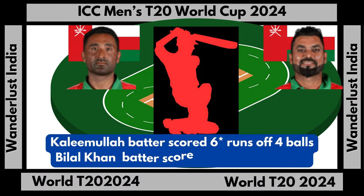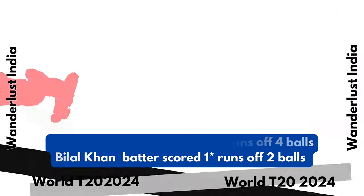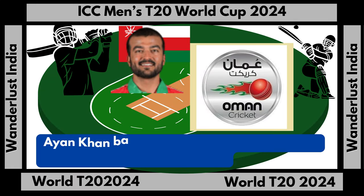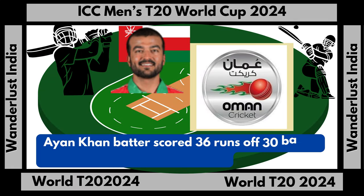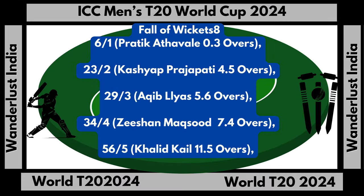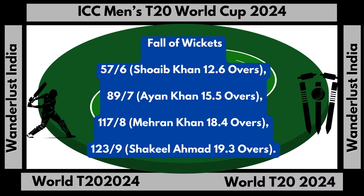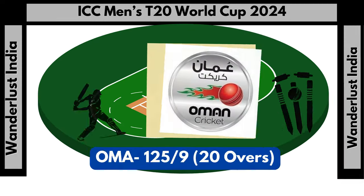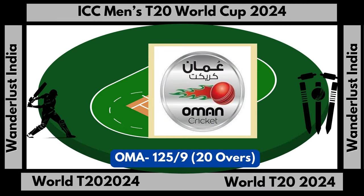Kaley Mulla batter scored 6 not-out runs off 4 balls. Bilal Khan batter scored 1 not-out run off 2 balls. Ayan Khan batter scored 36 runs off 30 balls — 4s: 2, 6s: 2. Oman fall of wickets: 125 runs off 9 wickets. Oman total score: 125 runs off 9 wickets in 20 overs.